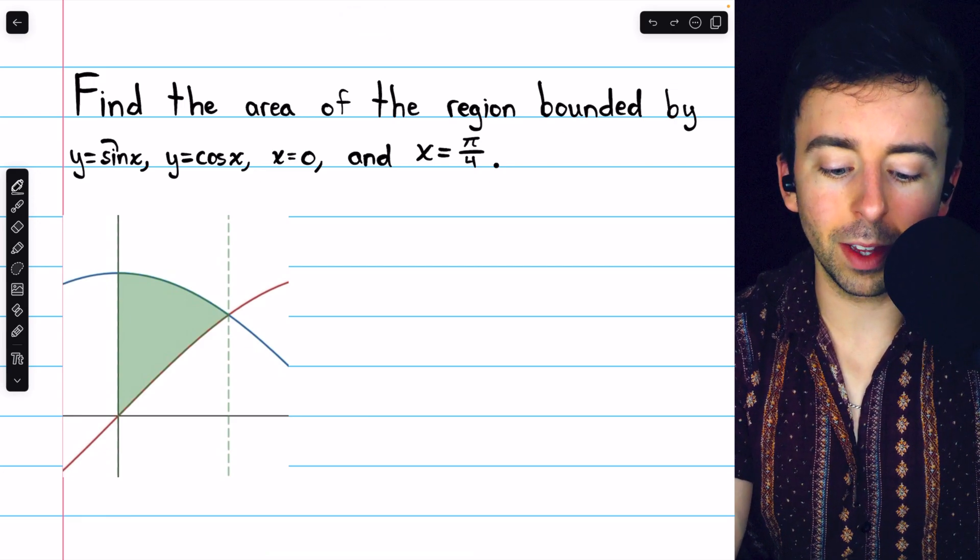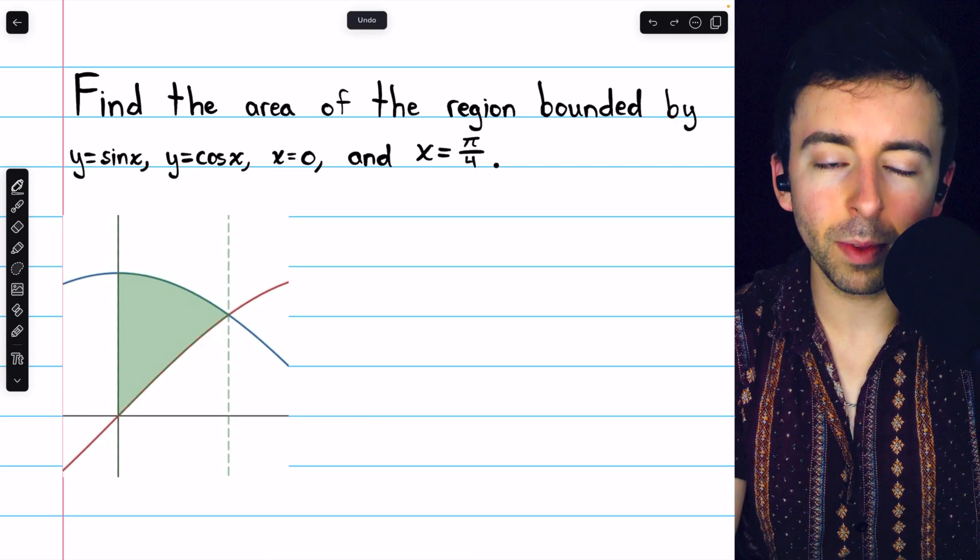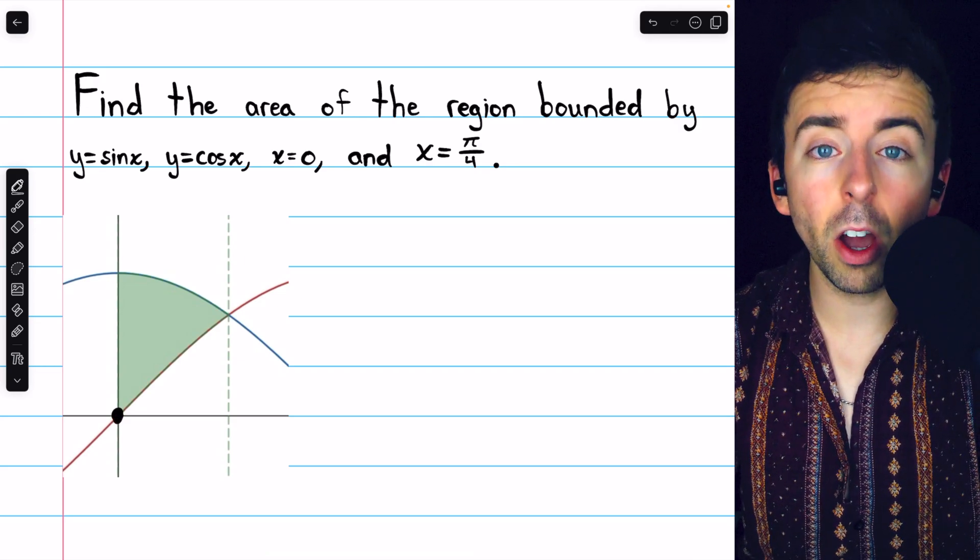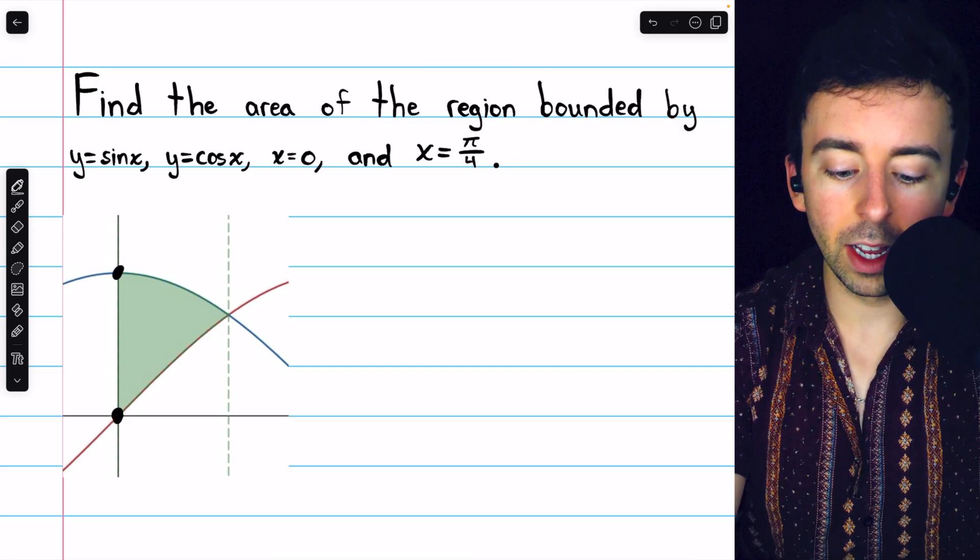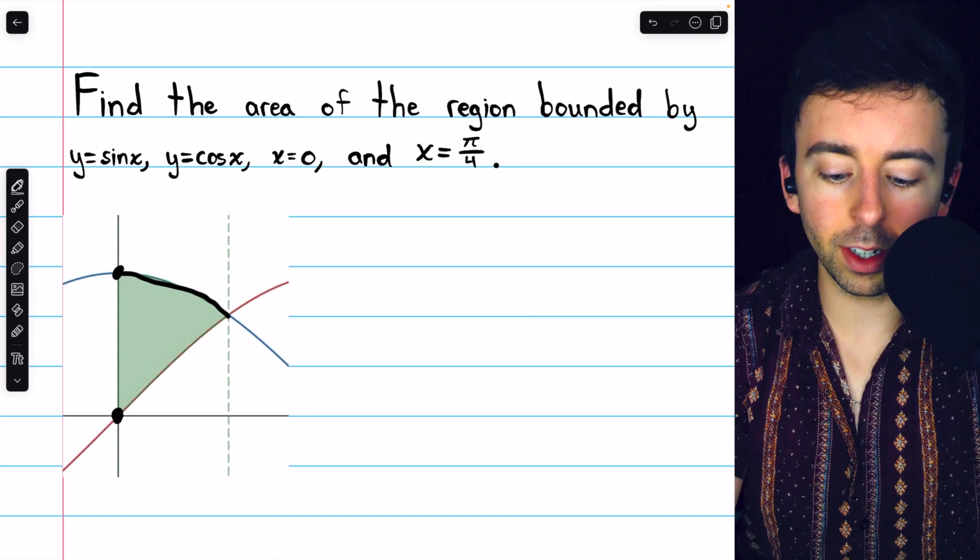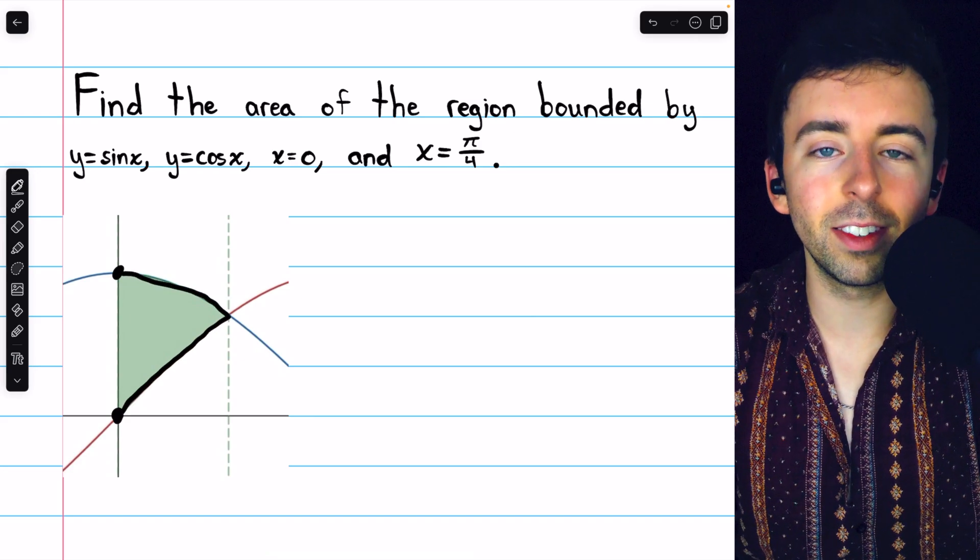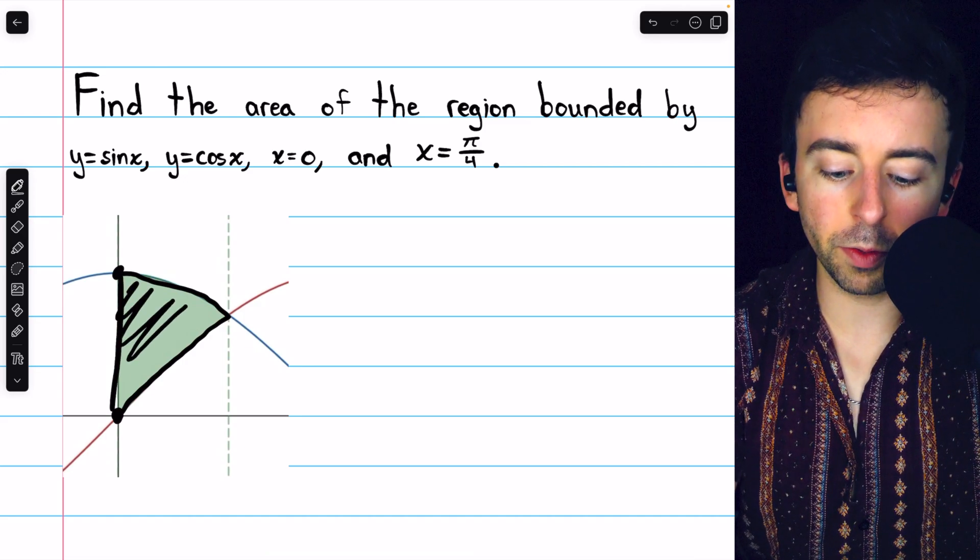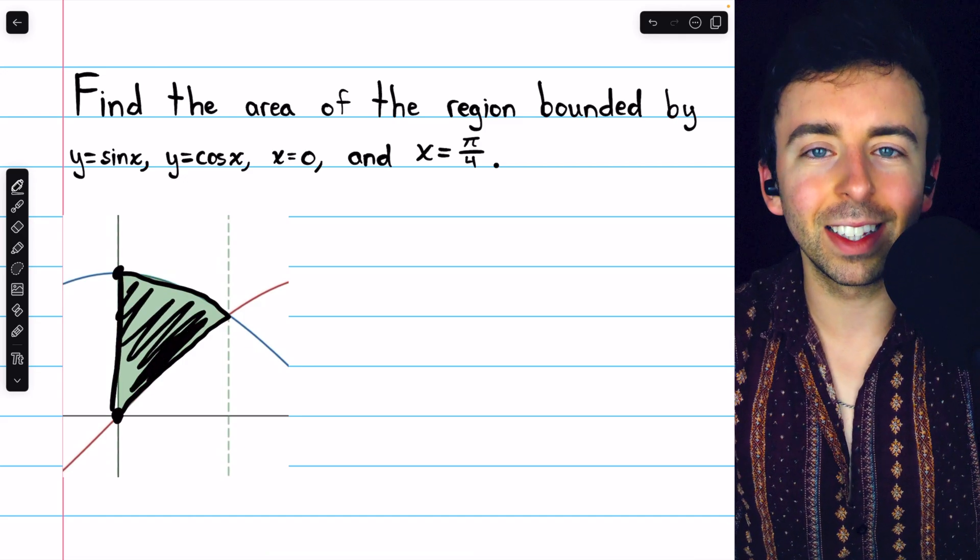Which function is upper? Is it sine x or is it cosine x? Hopefully you know that sine of zero is zero and cosine of zero is one. So certainly this upper function is cosine and this lower function, which starts at zero, is sine. So let's go ahead and do the integral in order to find the area of that interesting little region.